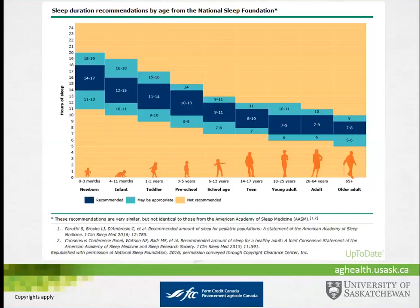This chart from UpToDate gives you a picture of what sleep needs are over the course of a normal human lifespan. When you're an infant, you need an enormous amount of sleep, which is maintained through the growing years — partly because growth hormone secretion occurs during sleep. By the time you're an adult, you need somewhere between seven and nine hours of sleep on average. There are a few people who need a bit more or less, but that's the benchmark. A simple answer to how much sleep you should get is at least seven hours.